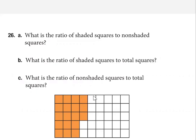And the non-shaded: I've got 2 here, but I've got 5 columns of 5 — that's 25 — and then I've got another 2, that's 27. The ratio of shaded to non-shaded is 18 to 27, isn't it? Yes. But we've got to put that in lowest terms.